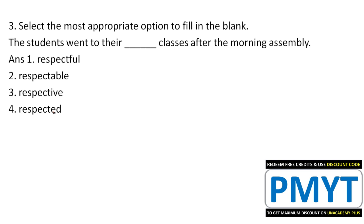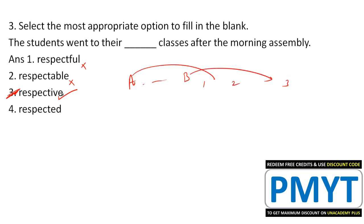Next: 'The students went to their ___ classes after the morning assembly.' The answer is 'respective.' As you may see in math questions — A and B have efficiency 2 and 3 respectively, meaning A corresponds to 2 and B to 3. Respective means each going to their own assigned classes.